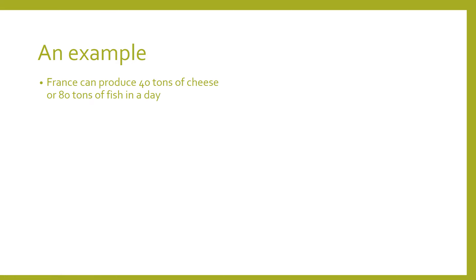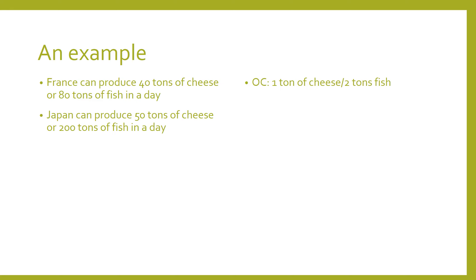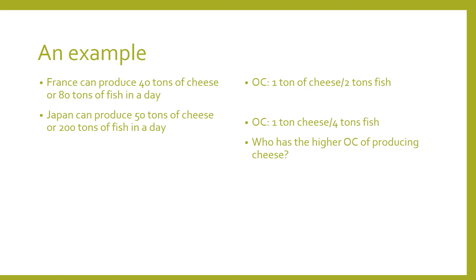Here's an example — I won't make you do such a complex example ever again, but it's important to understand how this works. Let's say France can produce 40 tons of cheese or 80 tons of fish in a day, and Japan can produce 50 tons of cheese or 200 tons of fish in a day. The opportunity cost for France is 40 tons of cheese to 80 tons of fish, meaning they give up one ton of cheese for every two tons of fish. Japan has an opportunity cost of one ton of cheese per four tons of fish. So France gives up fewer fish to produce cheese compared to Japan — Japan has to give up more fish to produce each bit of cheese. So if they trade, they can trade one ton of cheese per three tons of fish, with France specializing in cheese and Japan in fish.